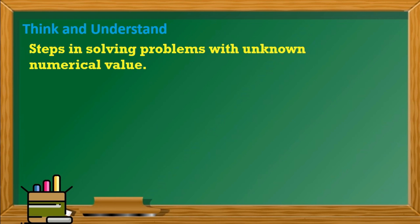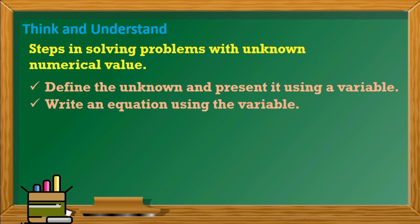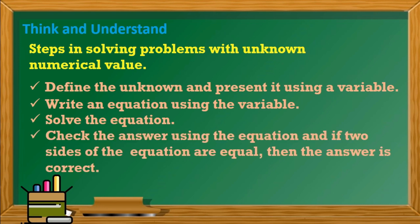Think and understand. There are steps in solving problems with unknown numerical value. First, define the unknown and present it using a variable. Write an equation using the variable. Solve the equation. Lastly, check the answer using the equation, and if two sides of the equation are equal, then the answer is correct.